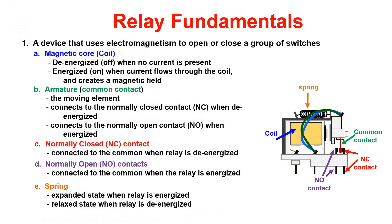A relay is a device that uses electromagnetism to open or close a group of switches — essentially an electronically controlled switch. Have you ever wondered how your turn signals work? If it were a normal switch, you'd have to flip it each time to get the blinker to flash. With a relay, along with other circuitry in the vehicle, the turn signal relay is given a signal to energize, allowing the light to flash on and off.